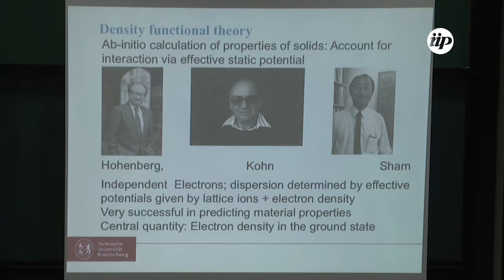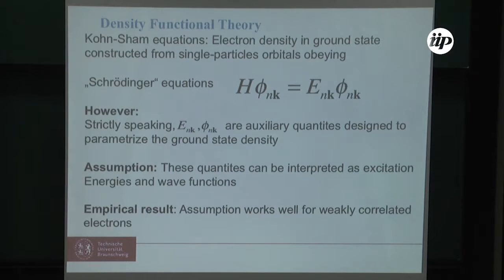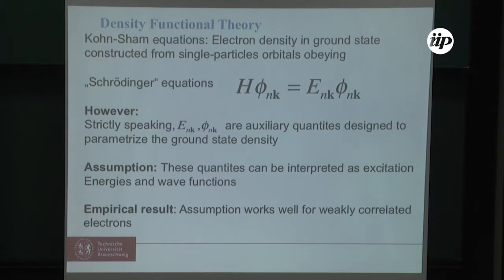The central quantity in this ansatz is the electron density in the ground state. The way it works is based on the Kohn-Sham equations, where one constructs the electron density from effective single-particle orbitals obeying a Schrödinger-type equation. One must keep in mind that strictly speaking the energies — which appear like band energies — and these single-particle orbitals are auxiliary quantities designed to parameterize the ground state density. The assumption is that these auxiliary quantities can be interpreted as excitation energies and wave functions, and empirically this works well for weakly correlated electron systems.